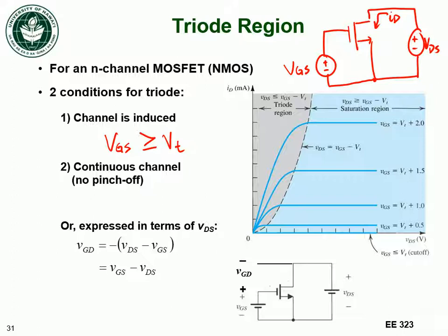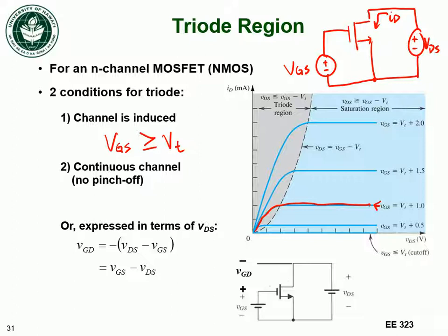If I make my gate-to-source voltage equal to my threshold voltage plus one volt, that corresponds to a particular curve. I could be anywhere on this curve, but I only want to be in the triode region, so I need to meet another condition: I cannot be pinching off the channel at the drain side — the channel has to be continuous. For that to occur, my voltage from the gate to the drain must be greater than or equal to the threshold voltage.